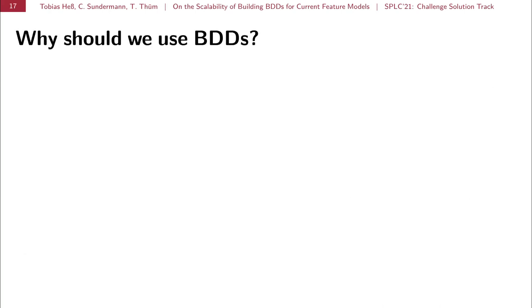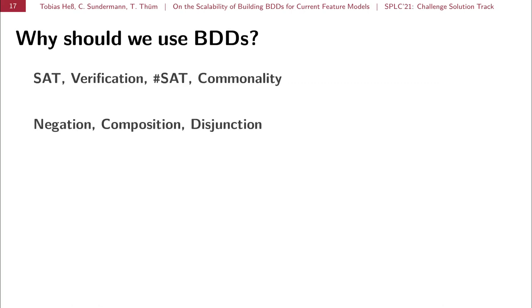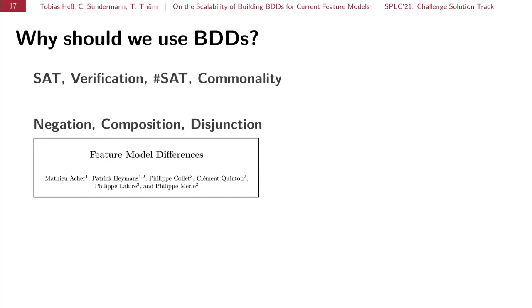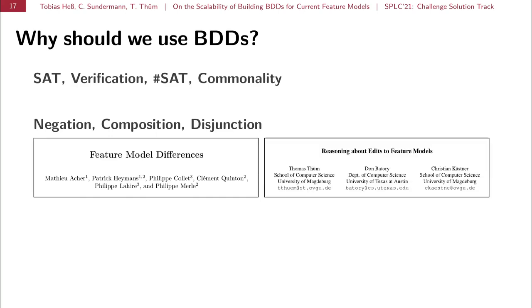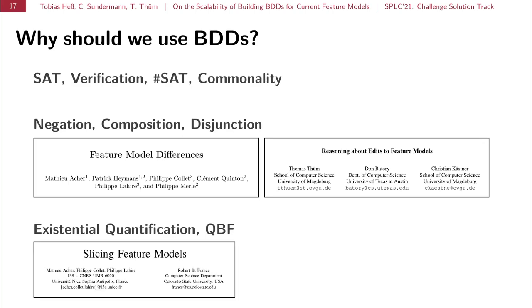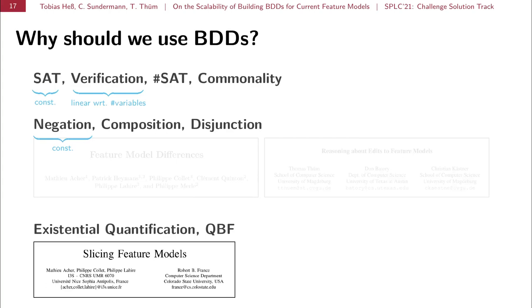So, why should we use BDDs? Because if you have a BDD for a feature model, then all these SAT solver and sharp SAT solver analysis are not necessary anymore. We can compute all this with BDDs. We can solve SAT, we can verify a product, we can compute the sharp SAT, we can compute the commonality, we can compute negation, composition disjunction, and we can, which we need again for feature model differences. And we can perform existential quantification or even more general fully quantified Boolean formula, which we can use for slicing. And these operations are all quite efficient on BDDs.